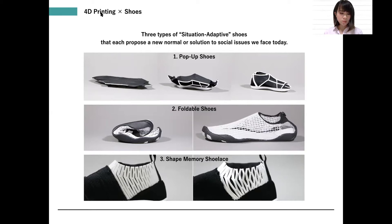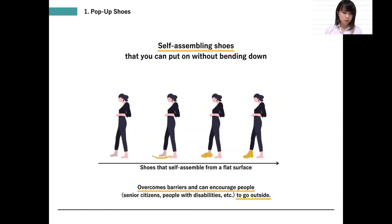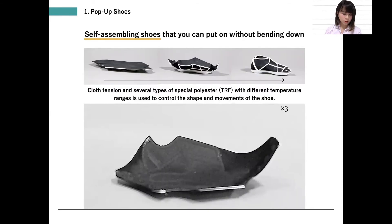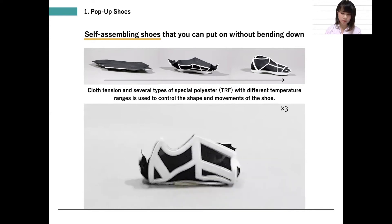Each shoe proposes a new normal or solution to social issues we face today. The first one is pop-up shoes. Inspired by the sneakers from Back to the Future II, these pop-up shoes self-assemble from a flat surface and do not require bending down to put on. These are designed to overcome barriers and motivate people to go outside. Cloth tension and several types of special polyester with different temperature ranges are used to control the shape and movements of the shoe.